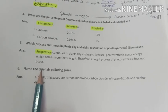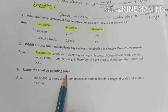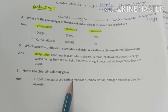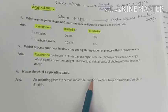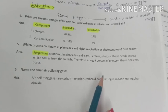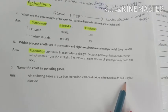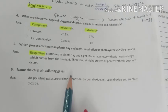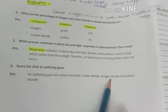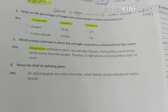Sixth question: name the chief air polluting gases. The air polluting gases are carbon monoxide, carbon dioxide, nitrogen dioxide, and sulfur dioxide.